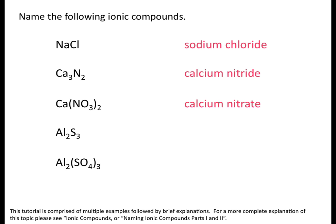Moving to the fourth example, we have aluminum sulfide, because our anion is just an element — once again you change the ending to -ide. The fifth example is aluminum sulfate, because that SO4 group is the sulfate ion. Remember that polyatomic ions never change their name.